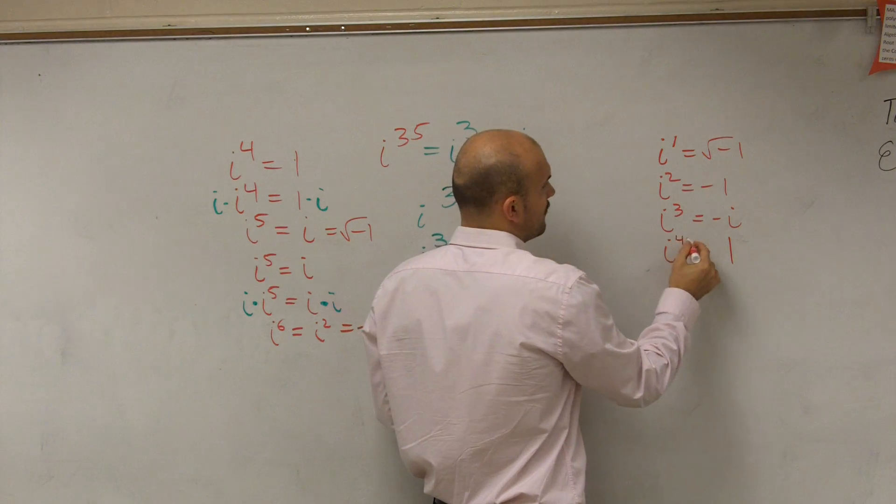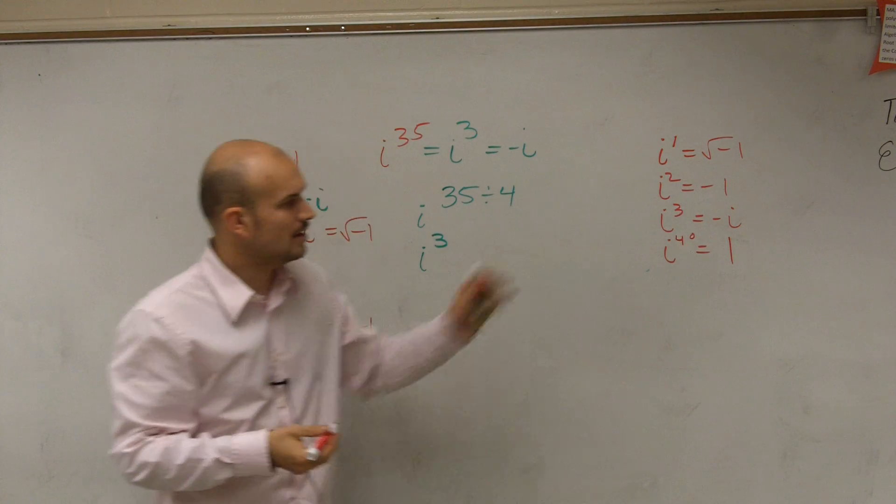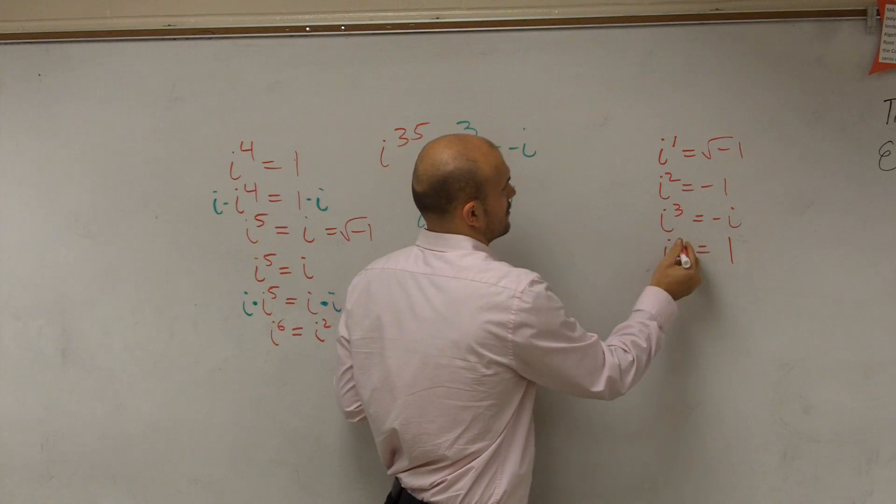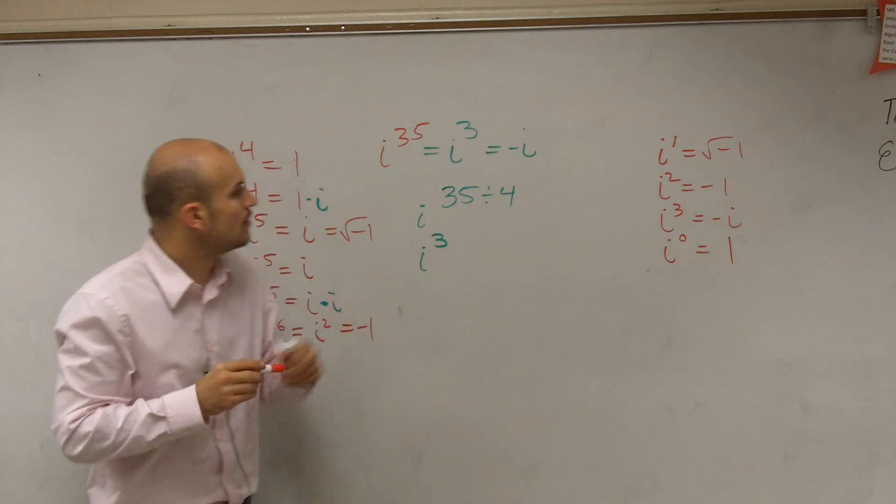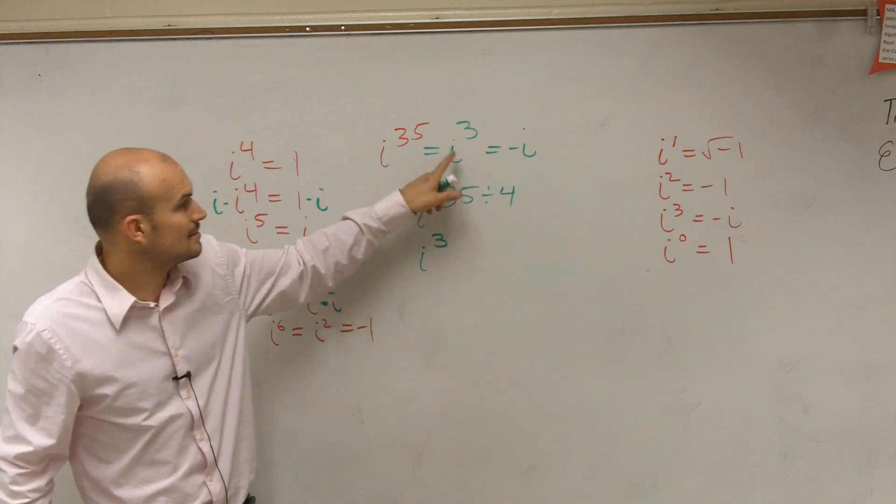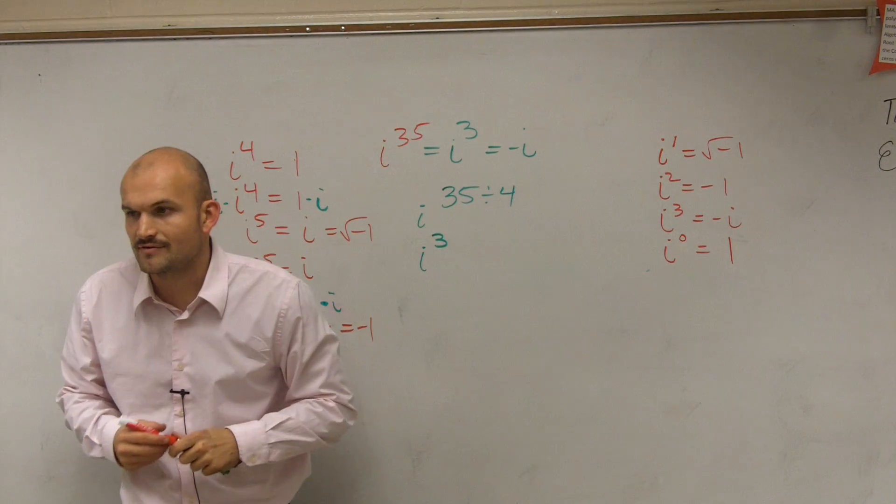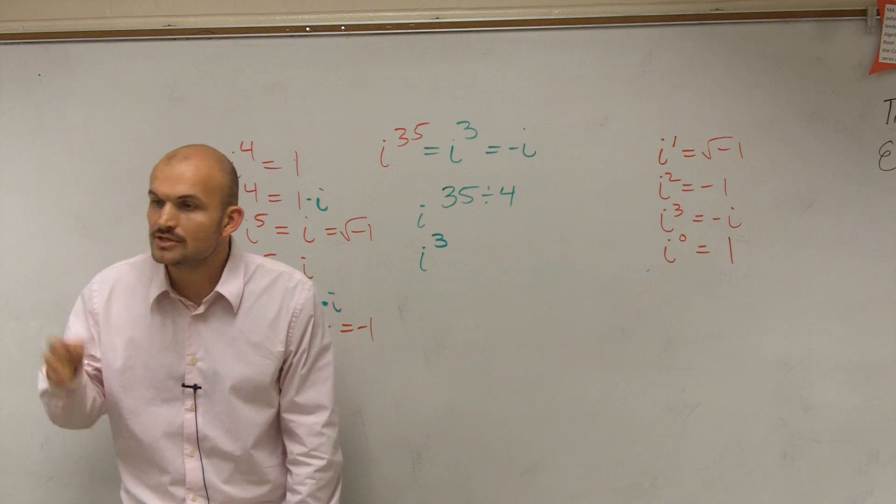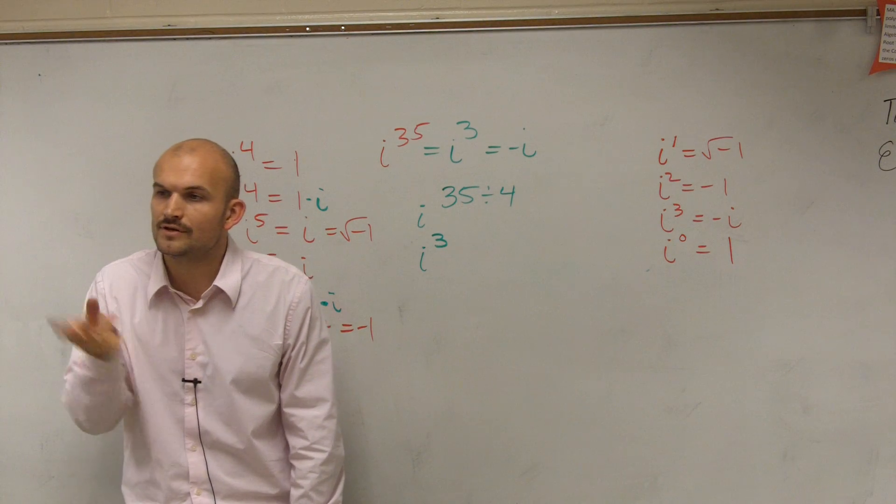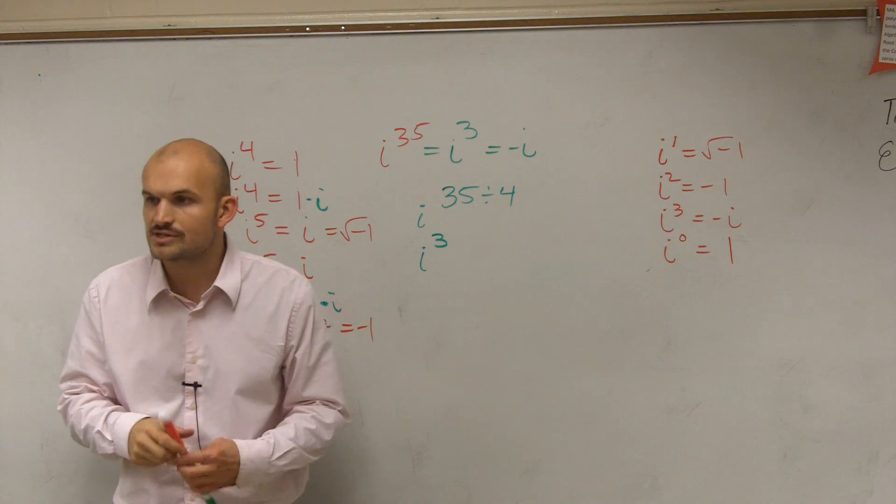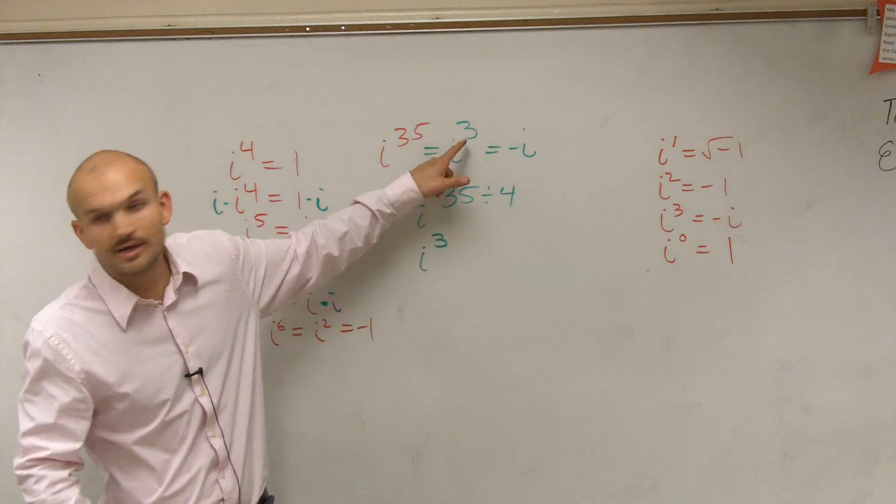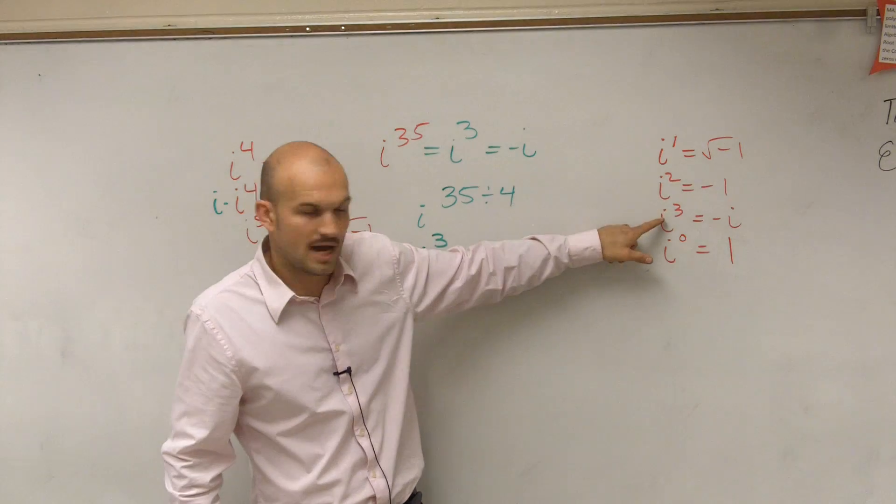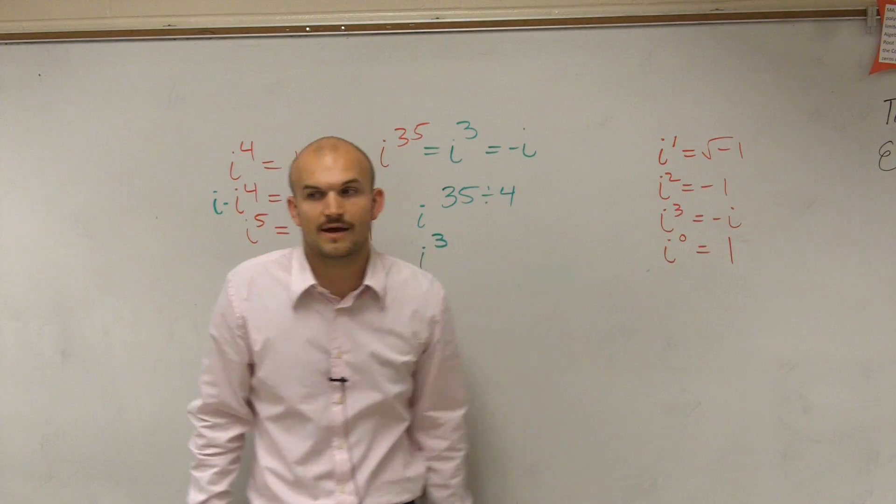When you have a remainder of zero, you're going to get one. How many times is four going into 35? Eight. So eight times four is 32, right? To go from 32 to 35, you have to go three, right? So that's your remainder is three. You take your remainder and you put it as your exponent. Then you go over here and you say which remainder has a remainder of three? i to the third, which is equal to negative i.